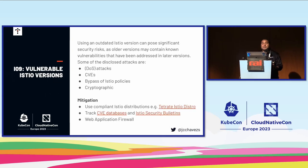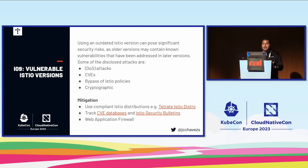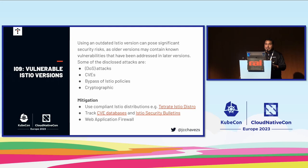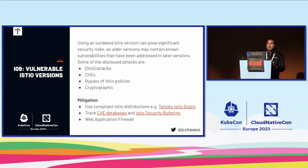Ninth is vulnerable Istio versions. Using an older version is a security risk due to known vulnerabilities, susceptibility to DDoS attacks, CVEs, programming bugs that allow bypassing Istio policies, and cryptographic failures. Mitigations include using a compliant Istio distribution (e.g., FIPS-compliant), tracking CVE databases and the Istio security bulletin to stay aware of the latest threats, and using a web application firewall to avoid risk. Note that a WAF inside Istio happens after the request enters, so if an attack targets Istio itself before the WAF layer, it won't help.